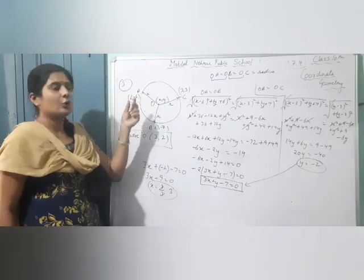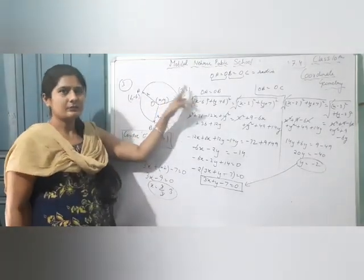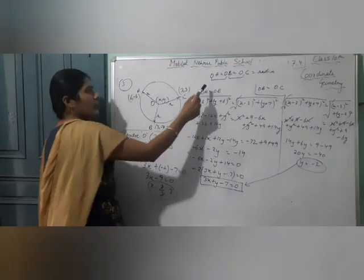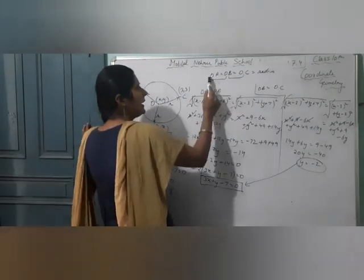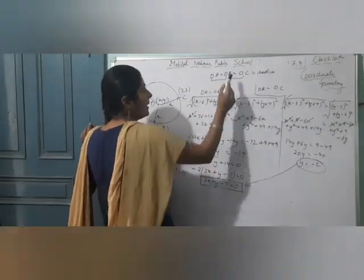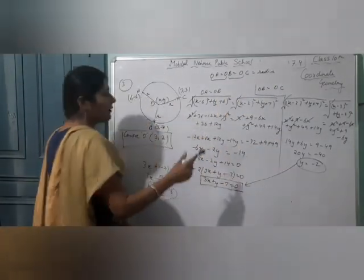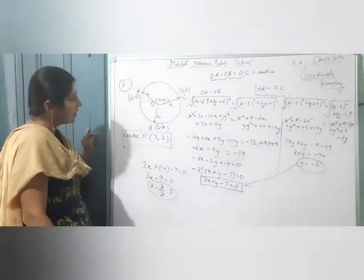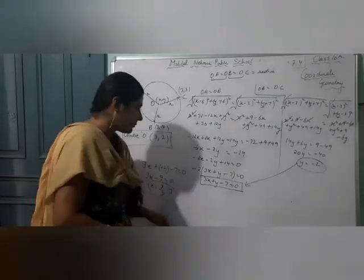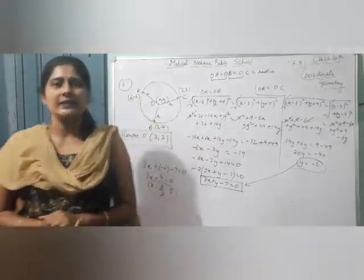So what we did: the circle passed through 3 points. We took OA = OB = OC (all radii equal), paired them as OA=OB and OB=OC, solved the two resulting equations to find x and y. This completes Question 3. Remaining questions will be done in the next video.